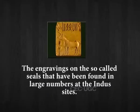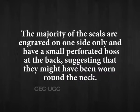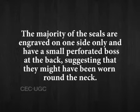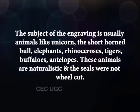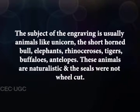The engravings on the so-called seals found in large numbers at Indus sites are notable. The majority of the seals are engraved on one side only and have a small perforated boss at the back, suggesting they might have been worn around the neck. The subjects of the engraving are usually animals like the unicorn, short-horned bull, elephant, rhinoceros, tigers, and buffaloes. These animals are naturalistic, and the seals were first cut into tablet shape with a saw and then engraved with a burin.